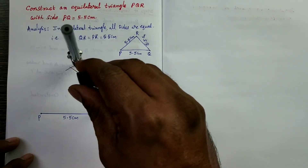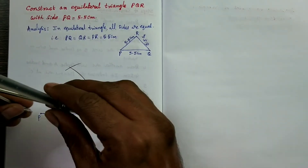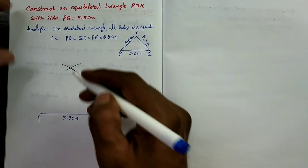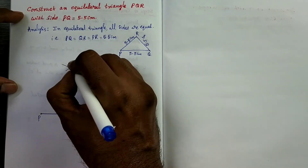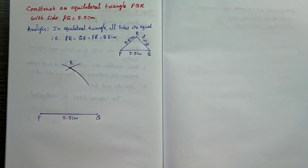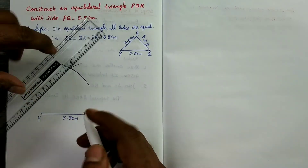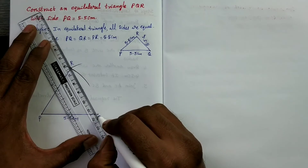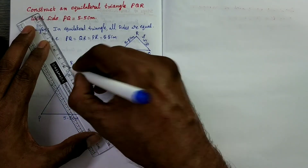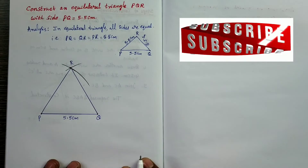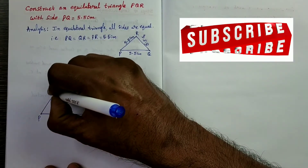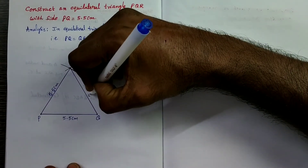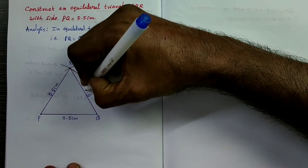With the same measurement of 5.5 centimeters as radius, draw another arc from center Q. The two arcs intersect at point R. Now join PR and then QR, and mark the measurements: PR is 5.5 centimeters, QR is also 5.5 centimeters.